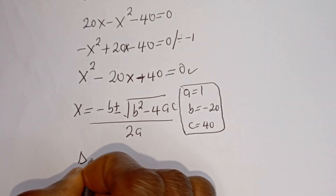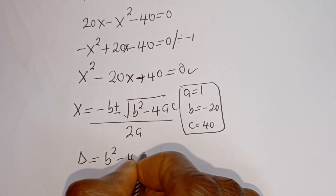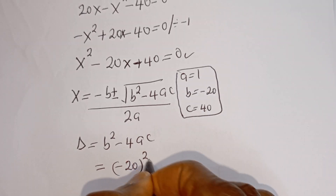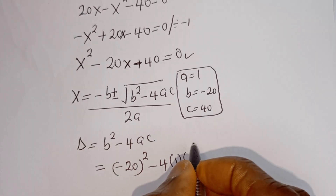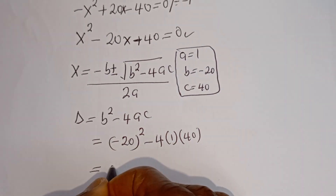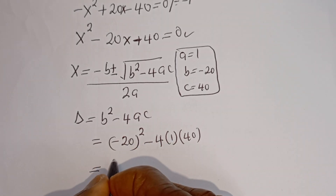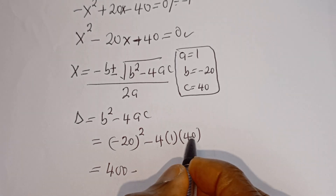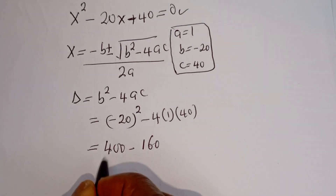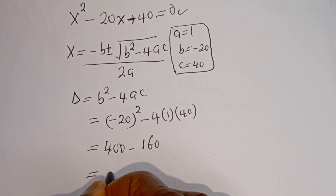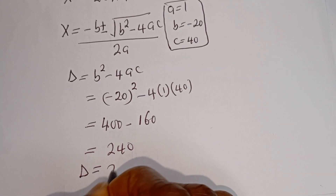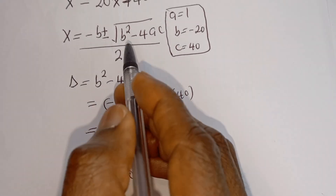The discriminant D is equal to b² minus 4ac. This is equal to (−20)² minus 4 times (−1) times (−40), which gives us 400 minus 160. D is equal to 240.